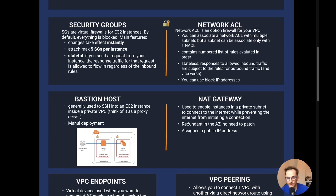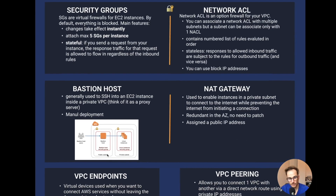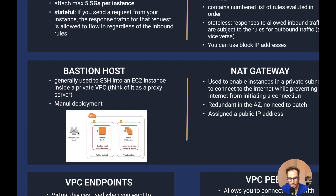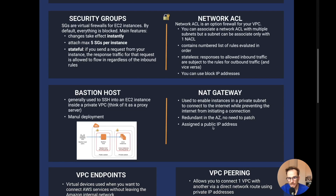Two more concepts always asked on the exam: bastion host and NAT gateway. The bastion host is generally used to SSH into an instance inside a private subnet — you can think of it as a proxy server. We have users, we have an EC2 instance behind a private subnet, and if we want users to access that private subnet we use a bastion host. The users connect to the bastion host, and from the bastion host they can access the private subnet because they're on the same VPC.